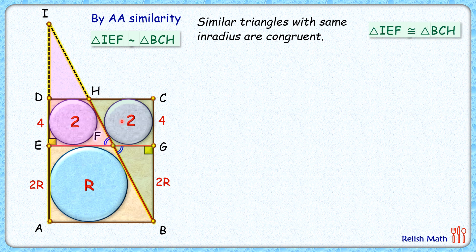As the triangles are congruent, the corresponding sides will be equal. We can say IE length equals BC length. IE length is ID plus 4, and BC length is 2R plus 4. Solving this equation, 4 is getting cancelled, so we are getting ID length as 2R centimeters.